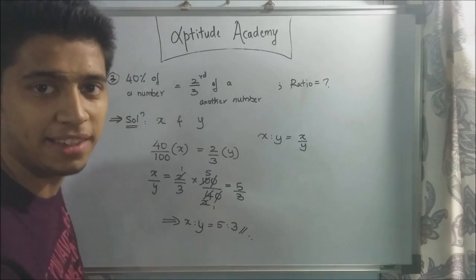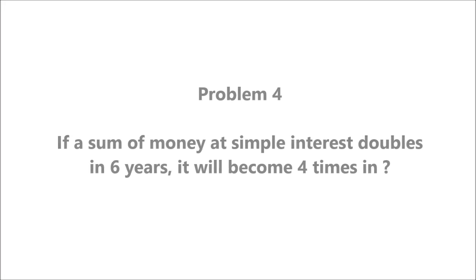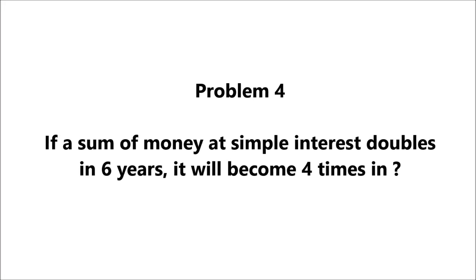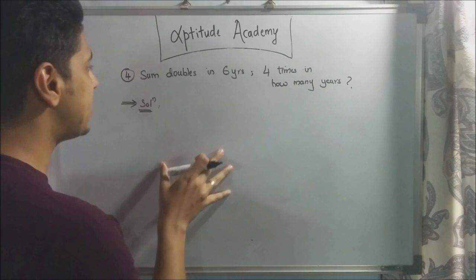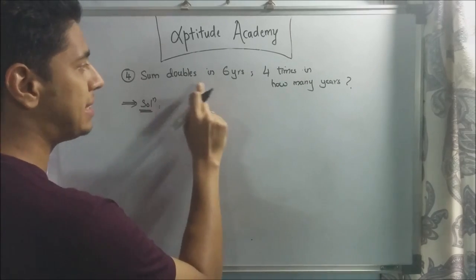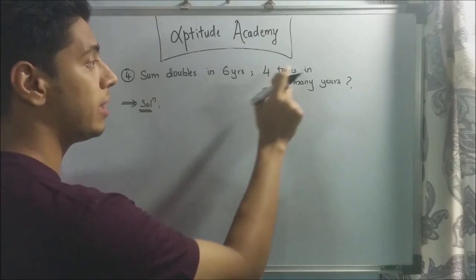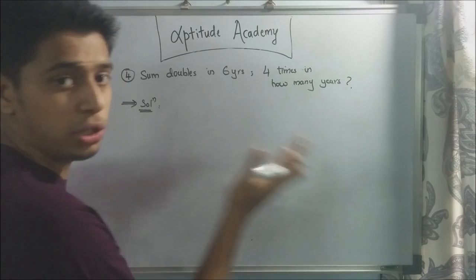Let's go into problem number four. Problem 4: If a sum of money at simple interest doubles in six years, it will become four times in? The fourth sum is based on simple interest. They've given you that the sum doubles in six years. And it becomes four times in how many years? That's what you need to find out.